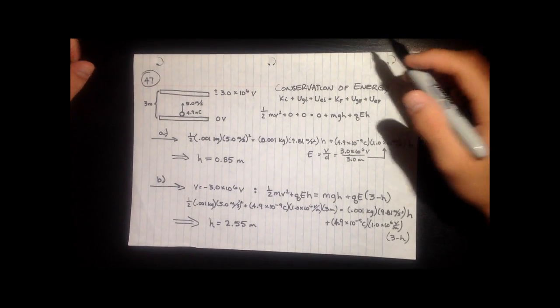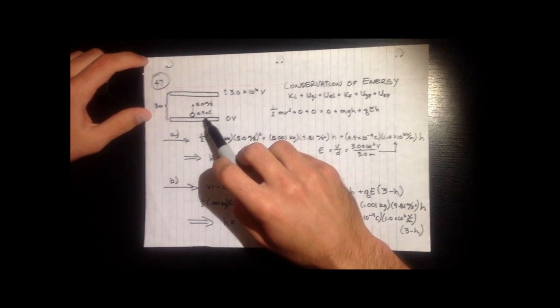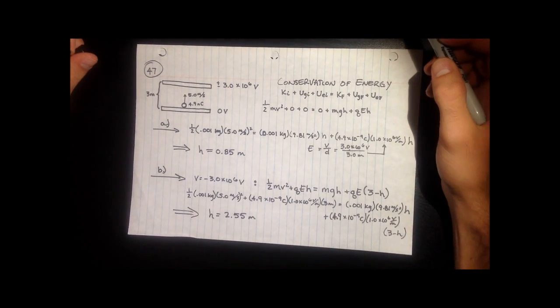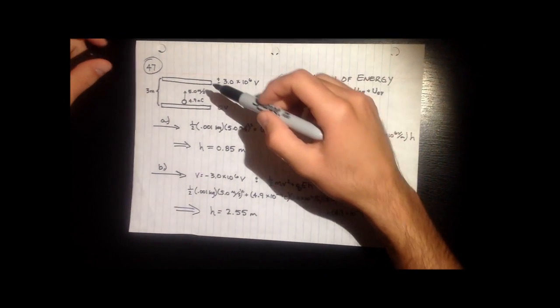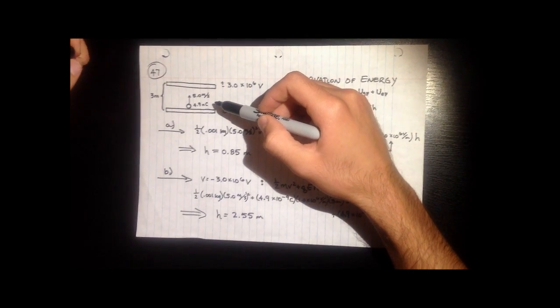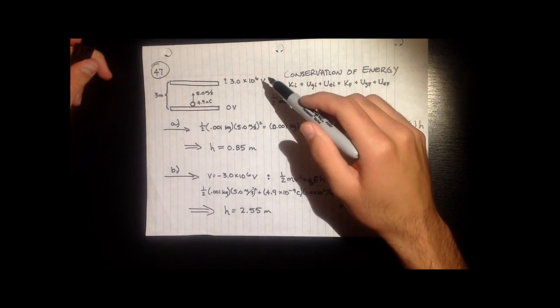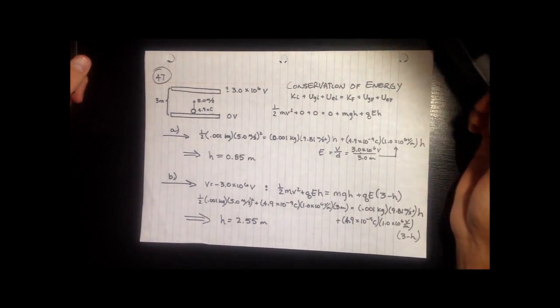In problem number 47, you have a glass ball that is 1 gram and 4.9 nanocoulombs that is shot up at 5 meters per second. It's in a room where the height of the ceiling is 3 meters, and at the floor and the ceiling you have a metal plate that has a potential difference of 3 times 10 to the 6 volts between them.